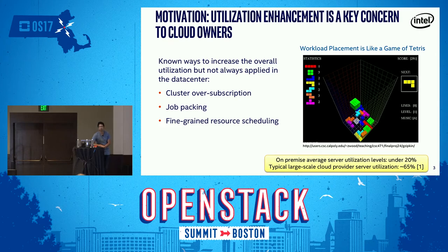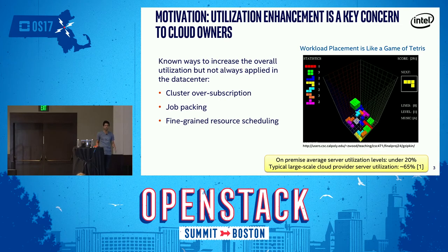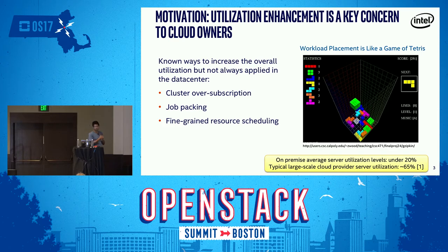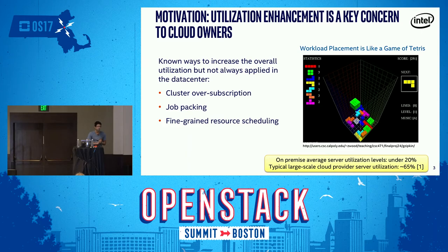What motivated us to work on this strategy? The very simple answer is resource utilization enhancement. Now that a lot of OpenStack core projects like Nova, Neutron, and Cinder are very close to maturity, you have an OpenStack cloud which runs fine. But the next question is: how do I enhance my resource utilization? How do I get the most out of my cloud resources which are already there? That's the reason why workload placement is very important — it's like a game of Tetris. We already know a few ways to enhance resource utilization like job packing or cluster oversubscription, but a lot of these methods are not very easy to implement — it completely depends on the data center, its use cases, and it has its own set of cons.